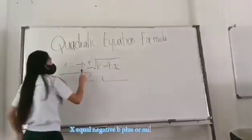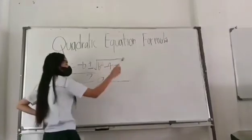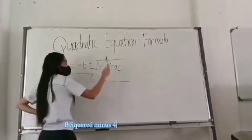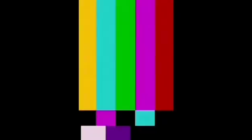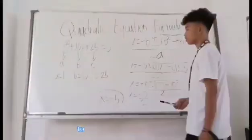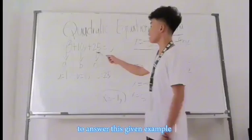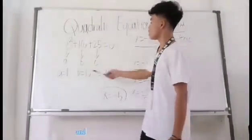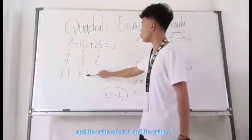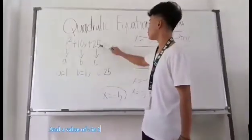To answer this given example, we are going to find the value of A, B, and C. The value of A is 1, the value of B is 10, and the value of C is 25.